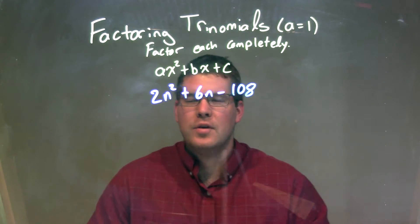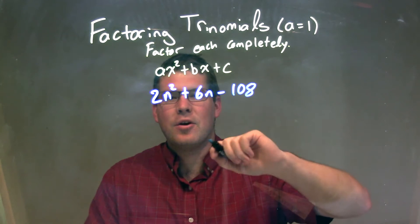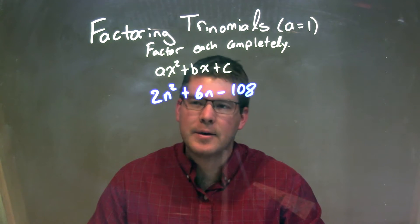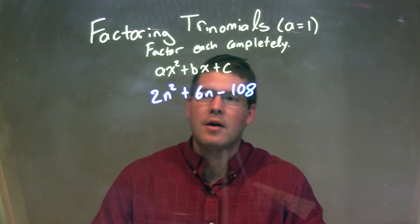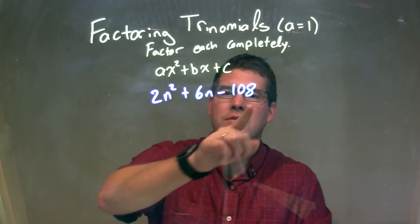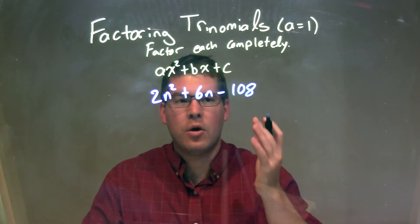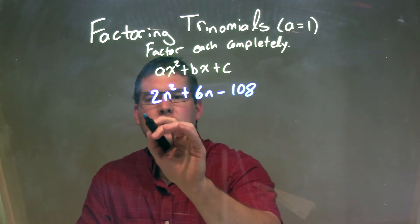Well, what I notice here is it's easier to factor when our a value is 1, the coefficient from our n squared here, but we don't have that. But I notice I have a 2, a 6, and a 108. Each one of these are even. So I can pull out a 2 from all parts.